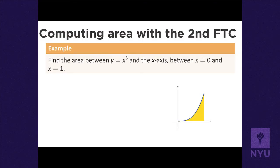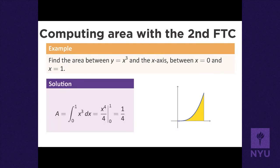Now that we have the Second Fundamental Theorem of Calculus, let's revisit some area problems. Here's a region we used Riemann sums to find: the area under y = x³ above the x-axis to the left of x = 1. Before, we had to look up the formula for sums of cubes. Now we just need an antiderivative for x³.